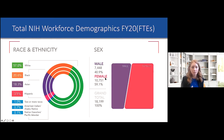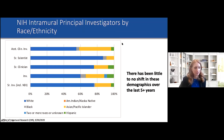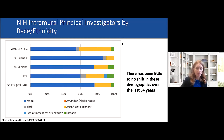Looking internally within NIH itself, the overall demographics at first glance seem okay, though there are areas with room for tremendous improvement, including among Hispanics whose numbers are quite low. But when you break this down further and look at the makeup of our internal principal investigator workforce by race and ethnicity, it's overwhelmingly white, and from FY16 to FY20 there has been little shift in these demographics.